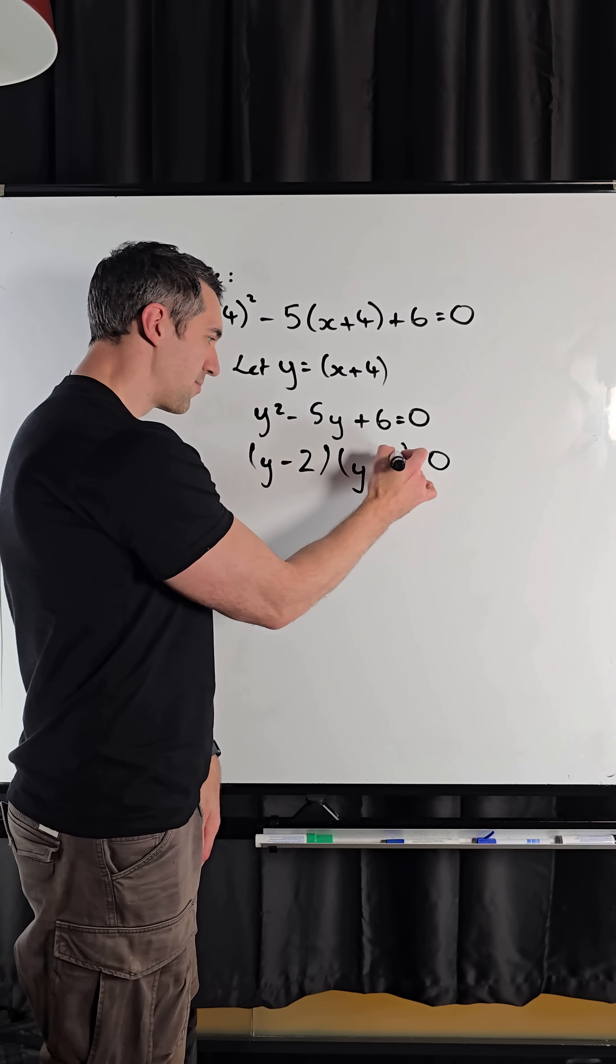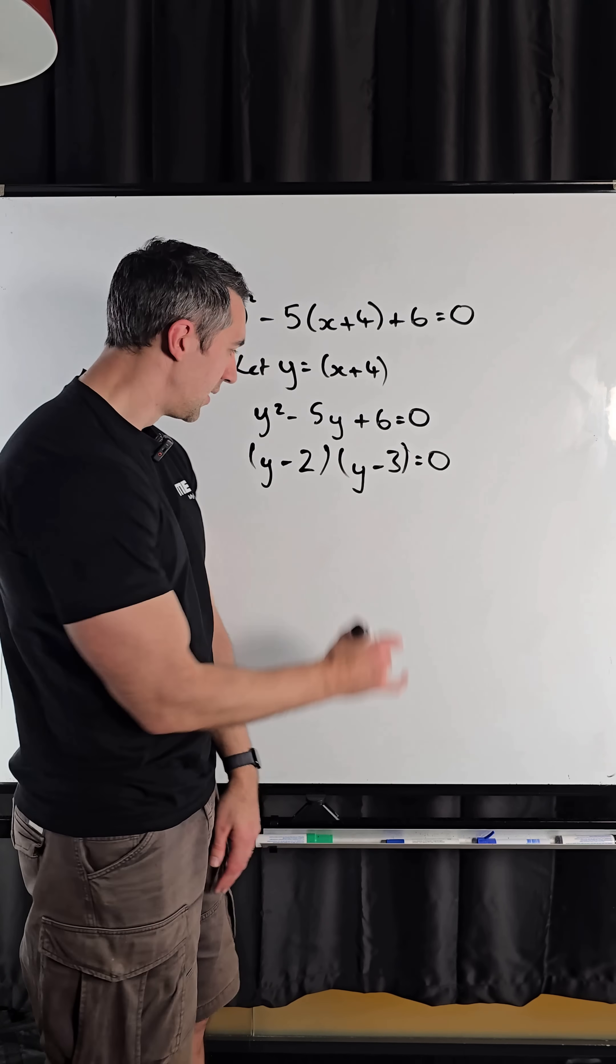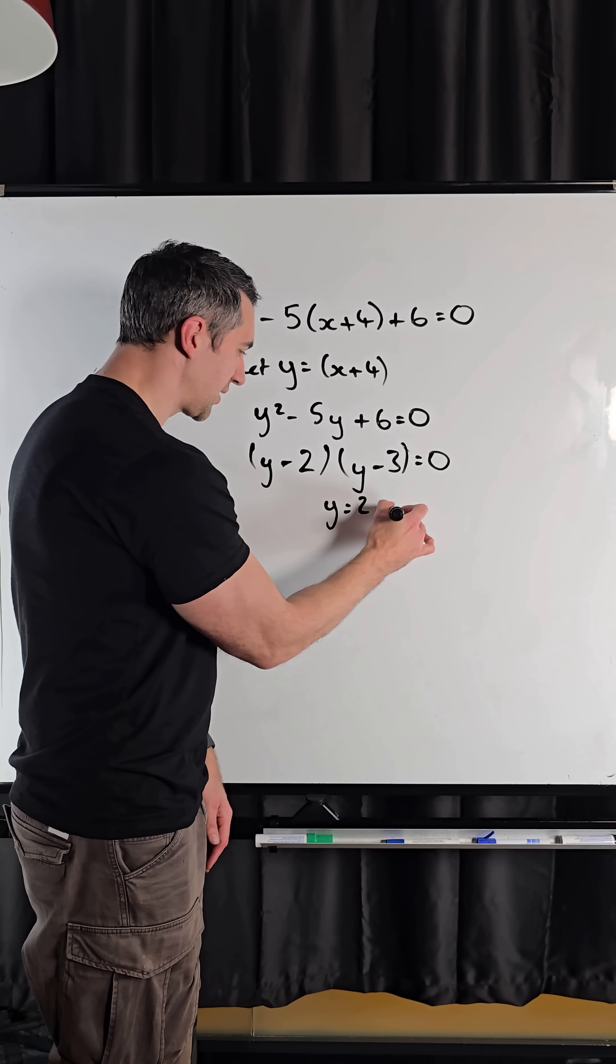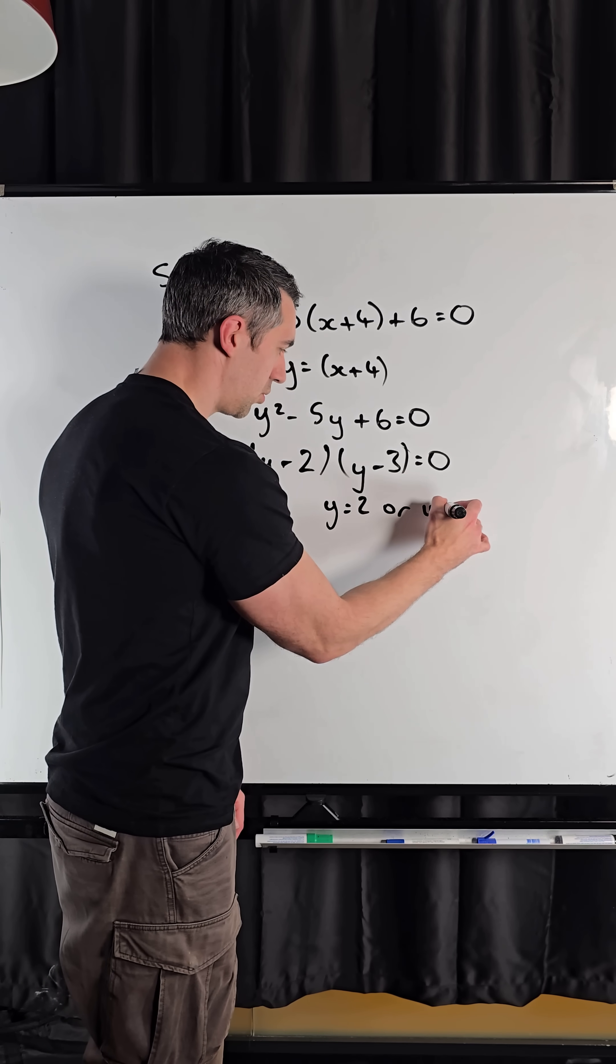So in this case, it's got to be minus 2 and minus 3. So we know our solutions for this quadratic would be y equals 2 or y equals 3.